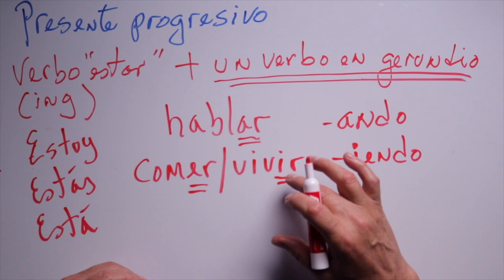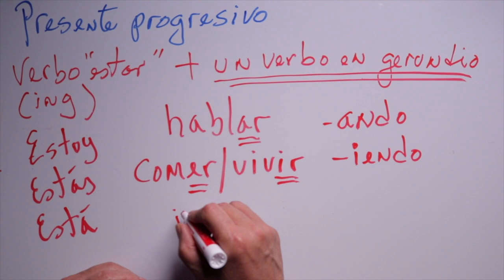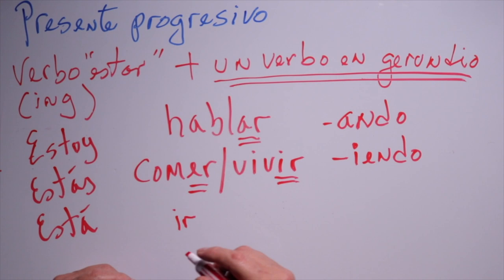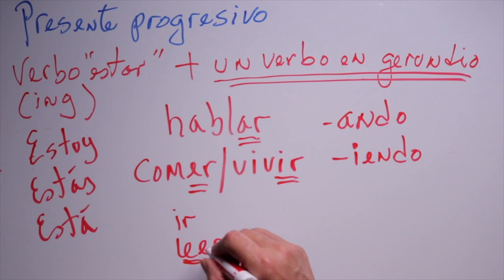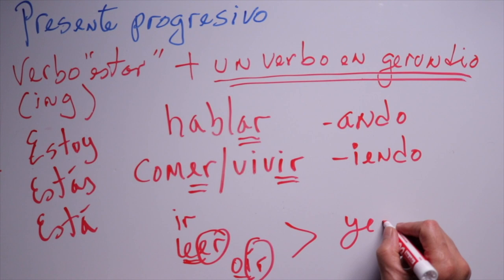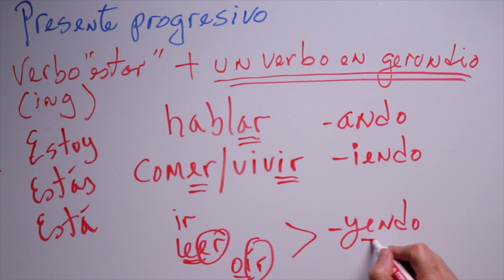If the verb is the verb ir, meaning 'to go,' or another verb ending in double vowels — like leer, oír, caer, traer, or poseer — the ending has to be substituted by -yendo. By the way, yendo is the ING form of the verb ir, meaning 'to go.'